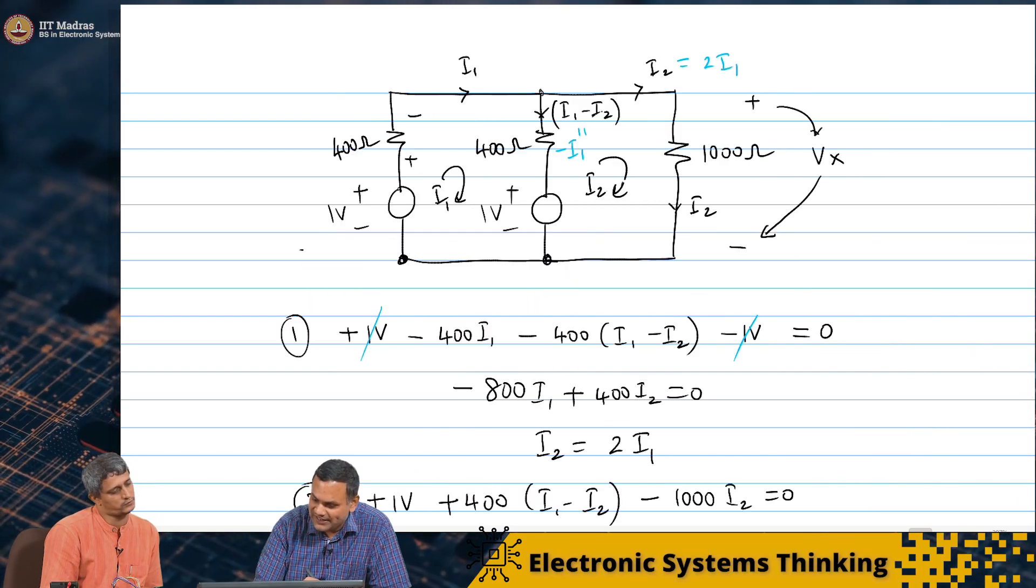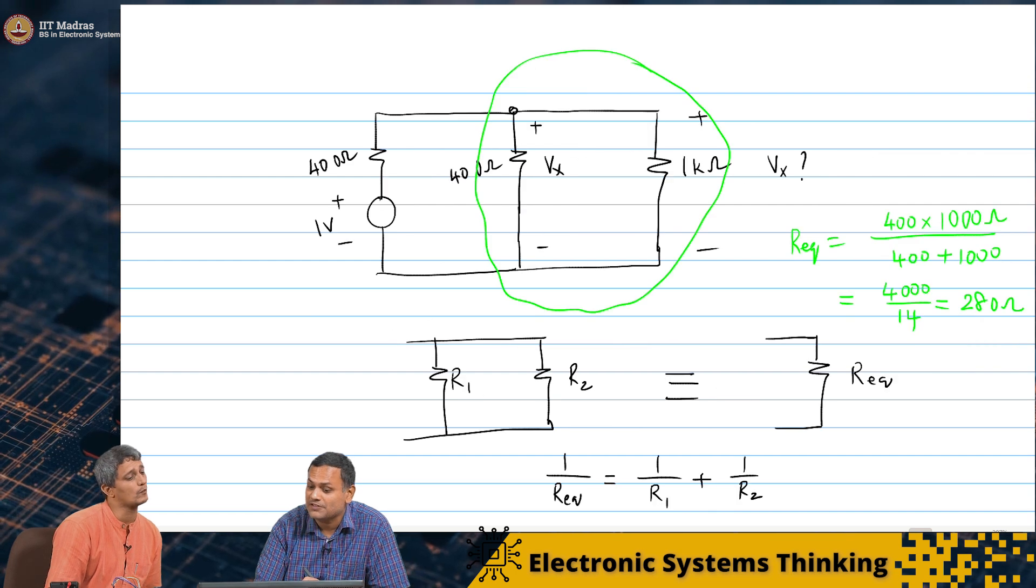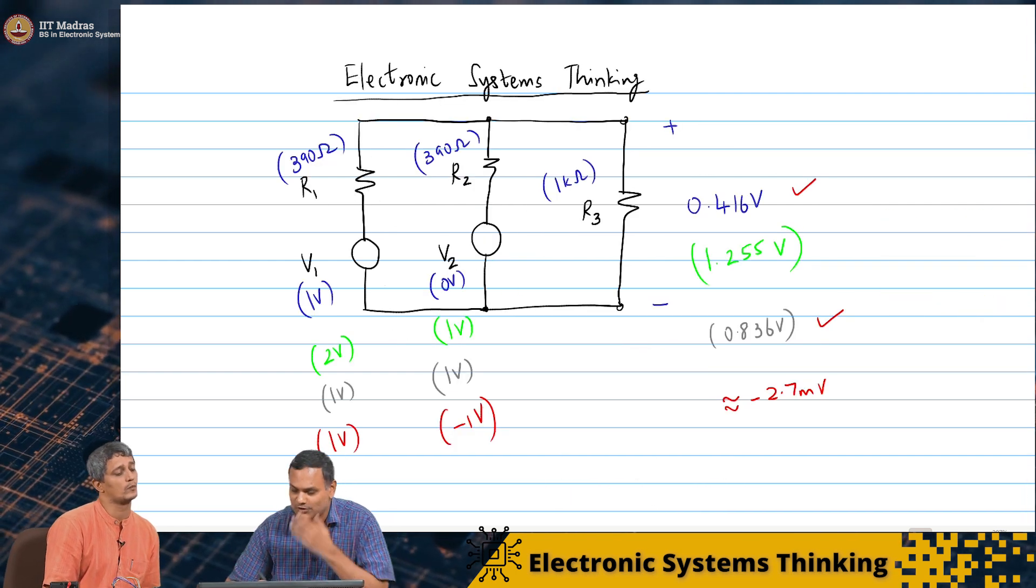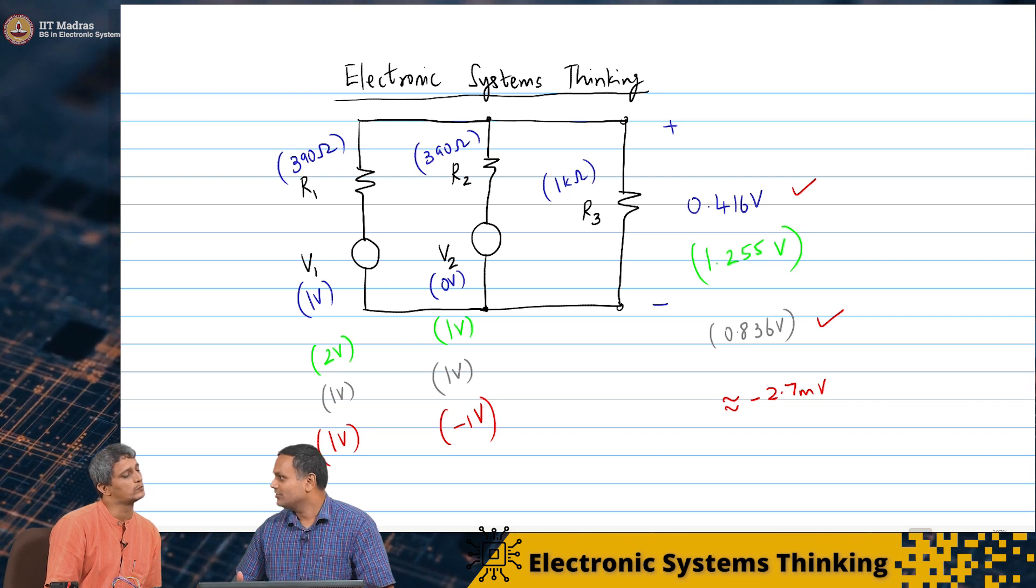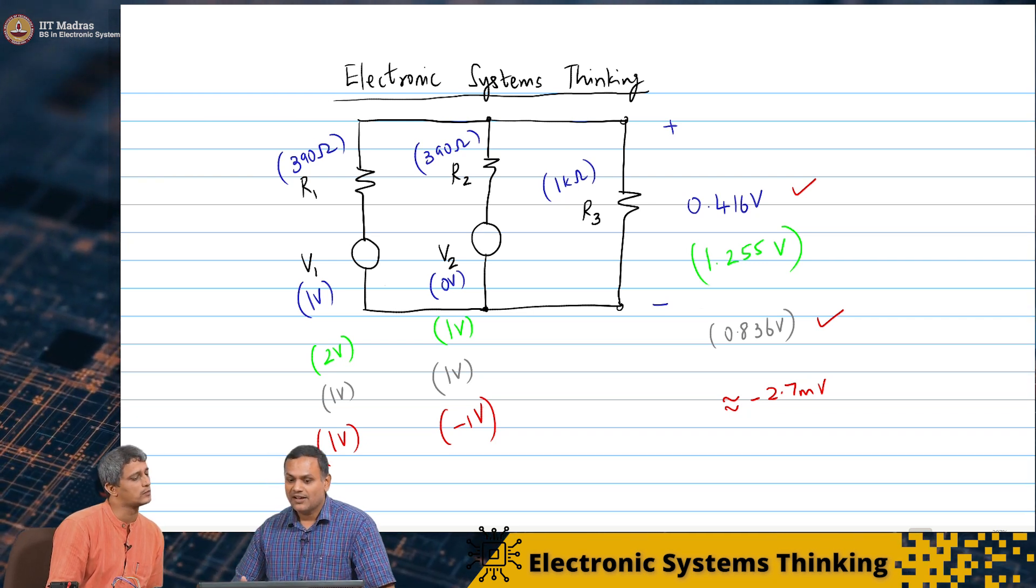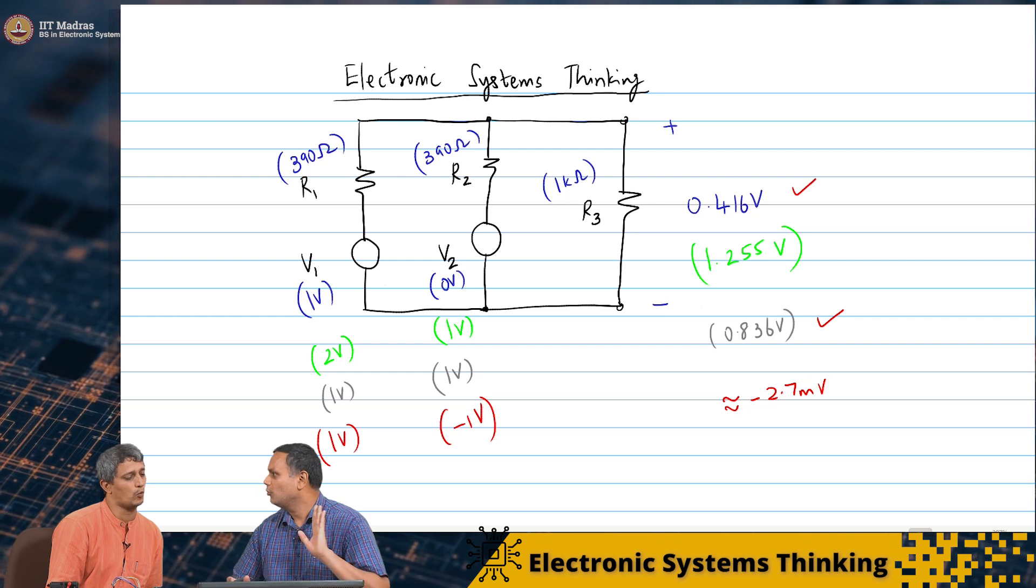So, in fact, now you can see this is a very powerful principle. Because let us go back to our original network. We tried a whole bunch of input voltages and we saw various output voltages.